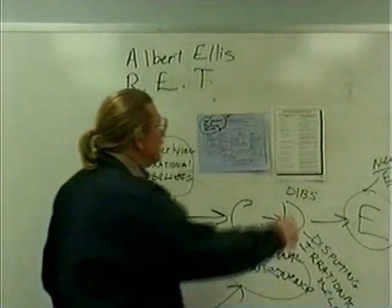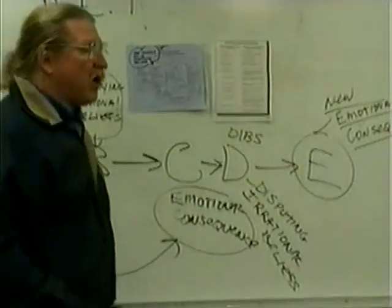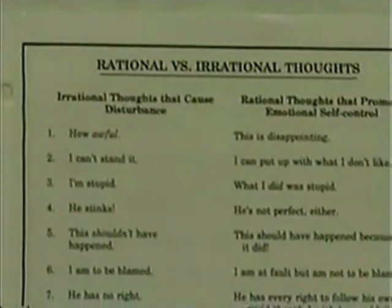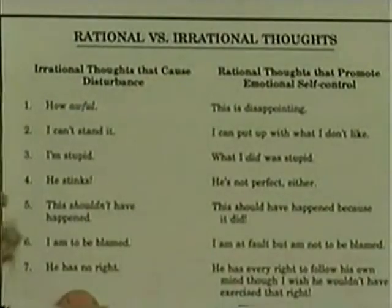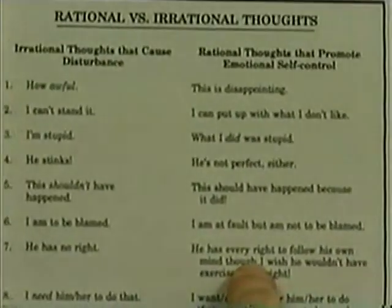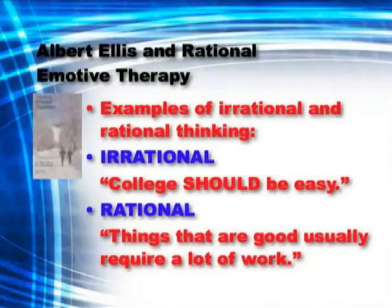Now let's look at key words that signal irrational thinking. 'How awful' versus 'this is disappointing' — it hurts, that's rational; 'how awful, I can't stand it,' that's irrational. 'He has no right to act that way' versus 'he has every right to follow his own mind, though I wish he hadn't done it that way.' 'Every time I try, I fail' — that's irrational; maybe sometimes, even frequently, things go wrong. 'This should be easier' — he says you're shoulding all over yourself. How about: 'I wish this was easier, but often things that are good for me aren't easy. It's tough, but I've learned it.'